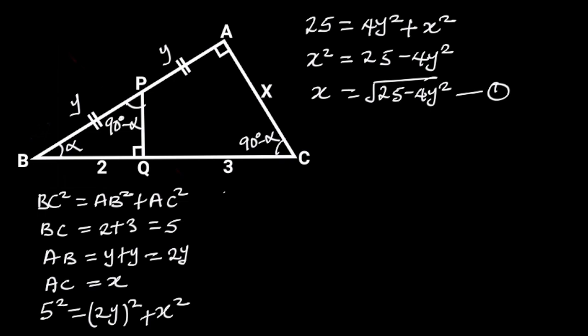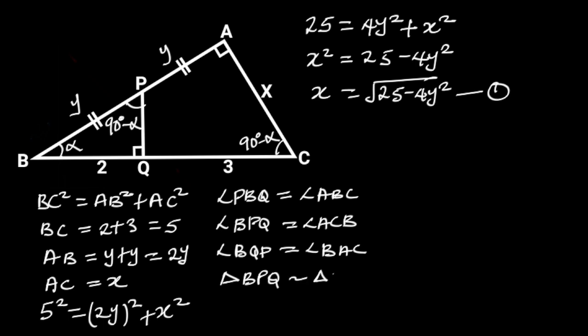Comparing triangle BPQ and triangle ABC, observe that angle PBQ is equal to angle ABC, angle BPQ is equal to angle ACB, and angle BQP is equal to angle BAC. This shows that triangle BPQ is similar to triangle ABC. And the proportionality of their corresponding sides is BQ over BA is equal to BP over BC.